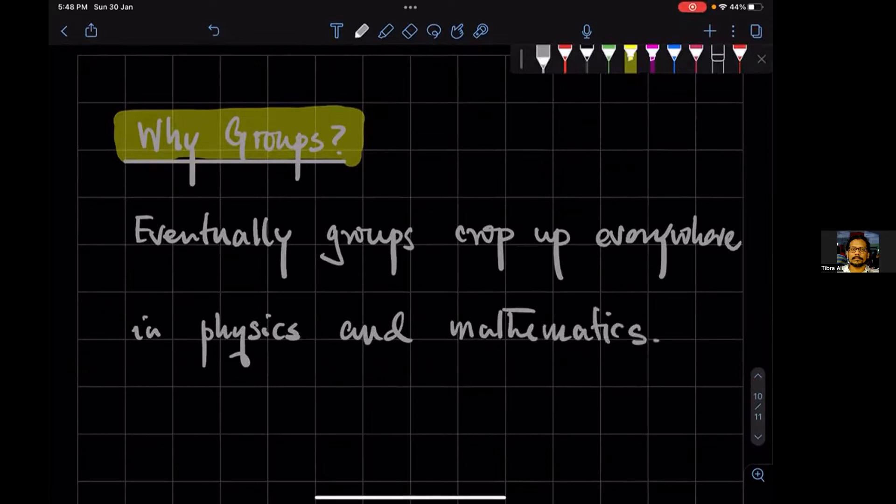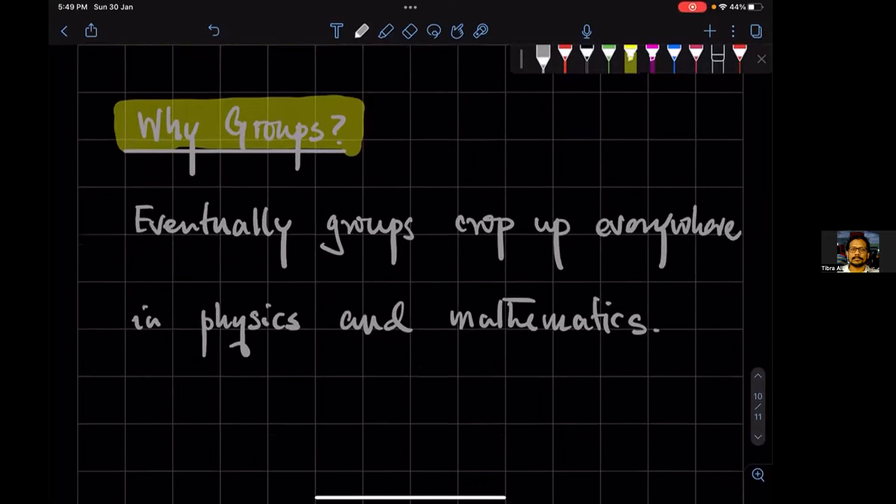Now historically, as far as I know, groups came from trying to solve the algebraic equation quintic, like the quintic or higher polynomial equations, right? And that is the subject of Galois theory.